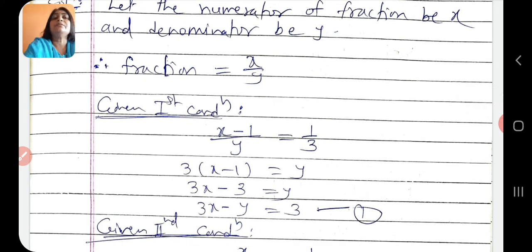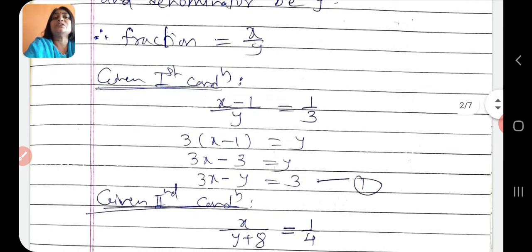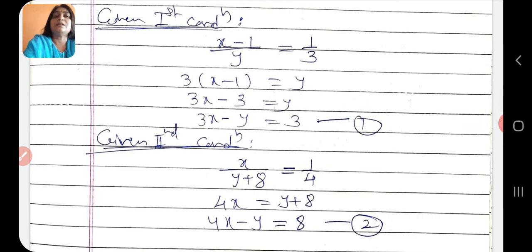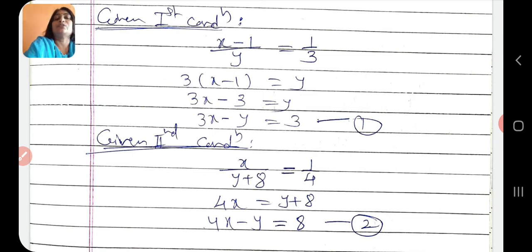Second condition: if 8 is added to the denominator then fraction is 1/4, that means x by (y plus 8) equals 1/4. By cross multiplication: 4x equals y plus 8, so 4x minus y equals 8. This is equation 2. Now solve equation 1 and 2 to get values of x and y, and then required fraction x by y aa jayega. Aage ka aapko solve karna hai.